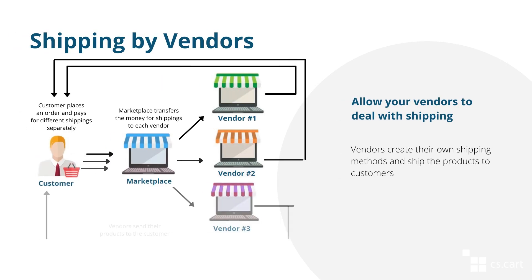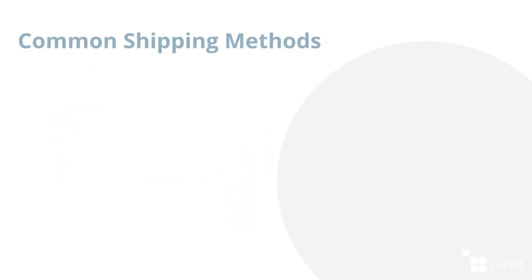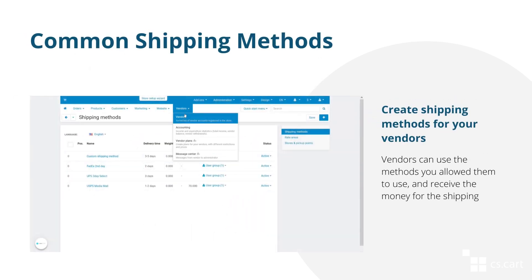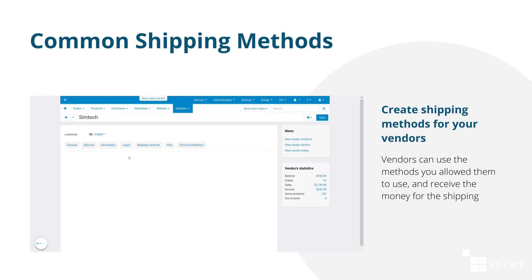Let's explore the first model where the shipping is performed by vendors. Vendors create and use their own shipping methods. A customer pays for the order, chooses the shipping method offered by the vendor, and the vendor packs up and ships the products directly to the customer. By the way, you can make it easier for vendors and create common shipping methods by yourself. Vendors can use the methods you allowed them to use and receive the money for the shipping.